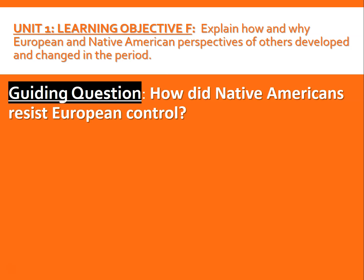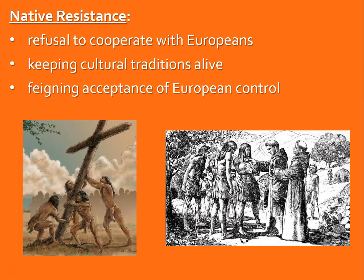Now let's look at Native American resistance to European control. There are lots of different ways to resist. You could simply refuse to cooperate — when Europeans say they own the land, you say no. Or if they tell you to go work in a silver mine, you just don't go. Another way of resisting is keeping your cultural traditions alive. Europeans would often dismiss or even forbid Native American cultural practices, but you could simply continue them — secretly, behind closed doors. That's a way of keeping your culture alive, and it is a means of resistance.